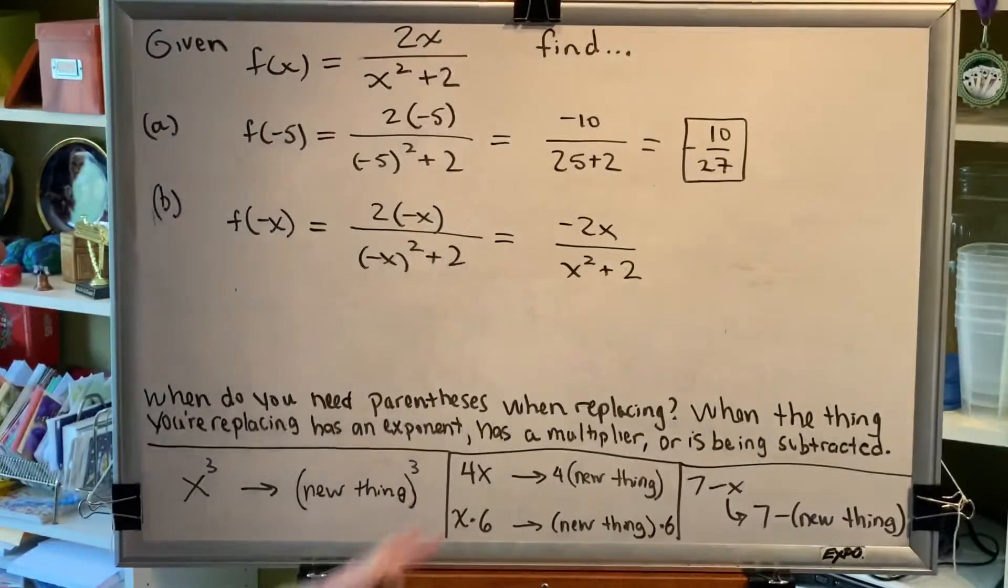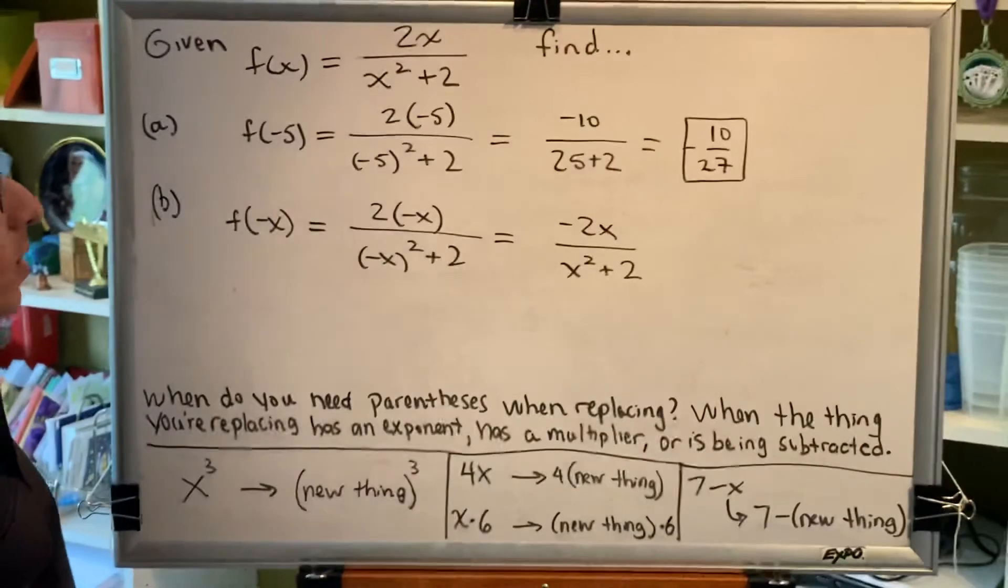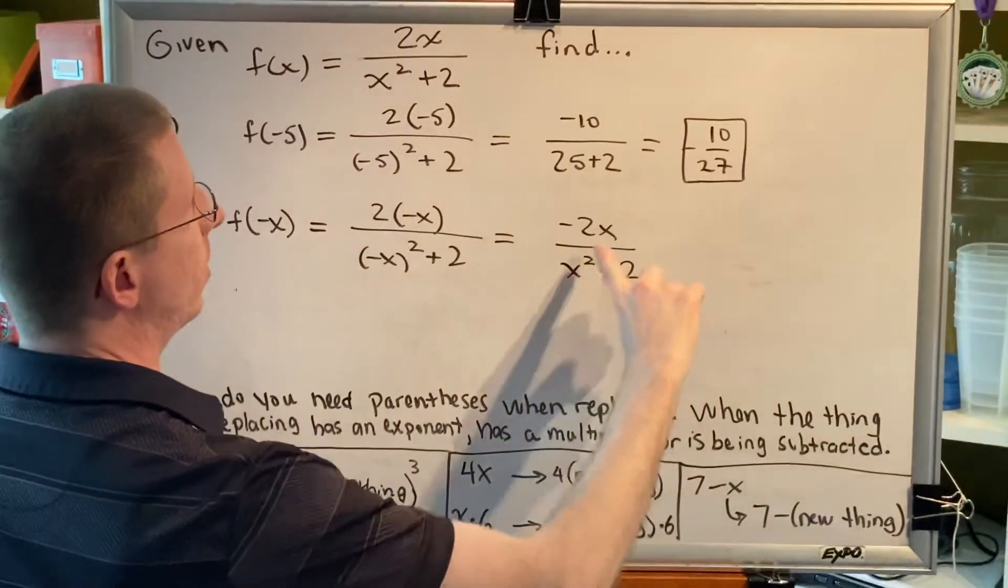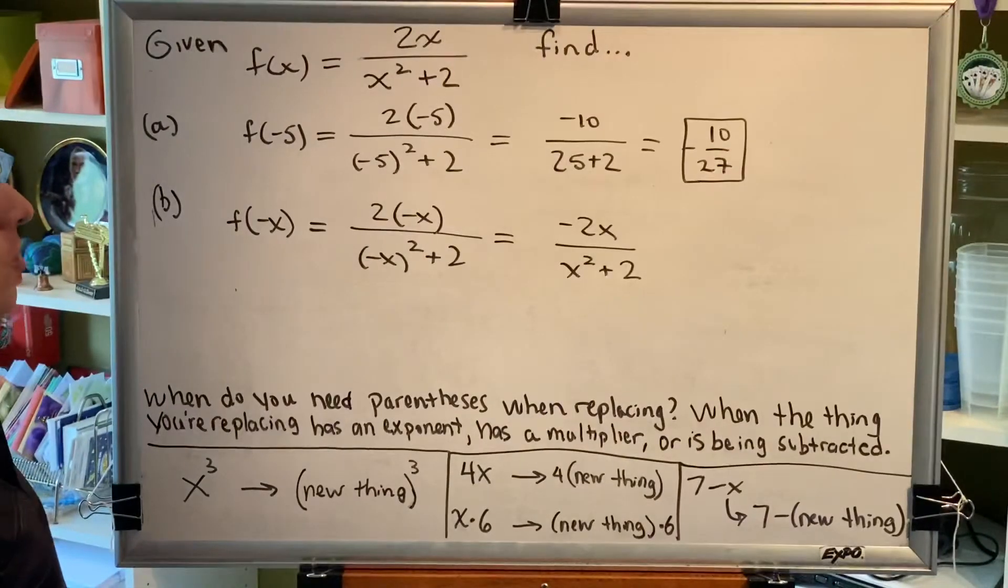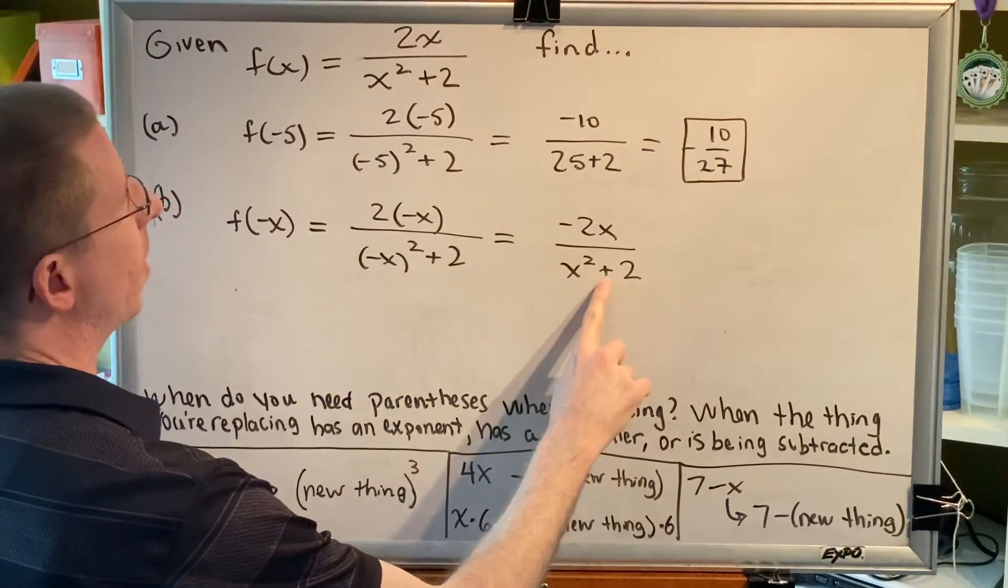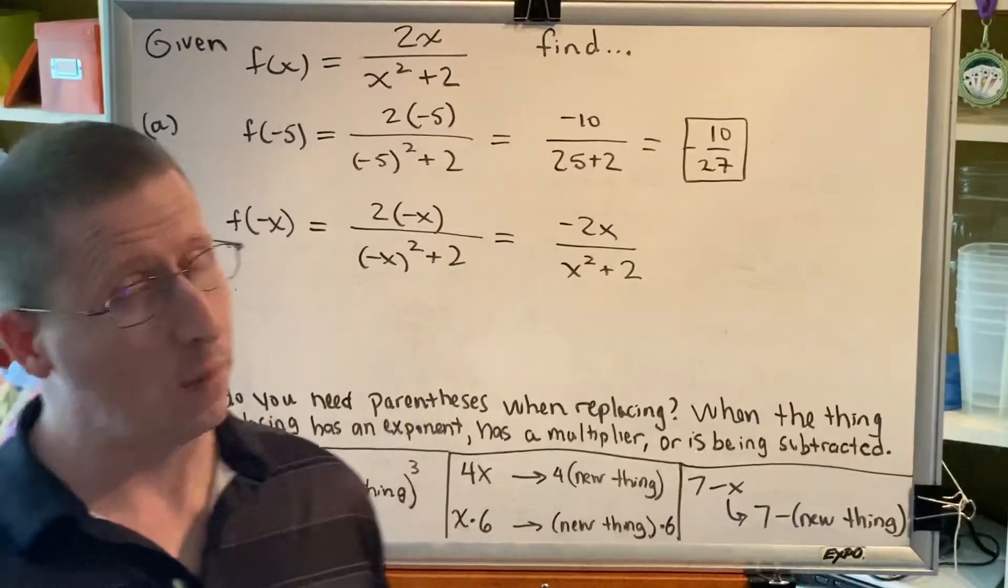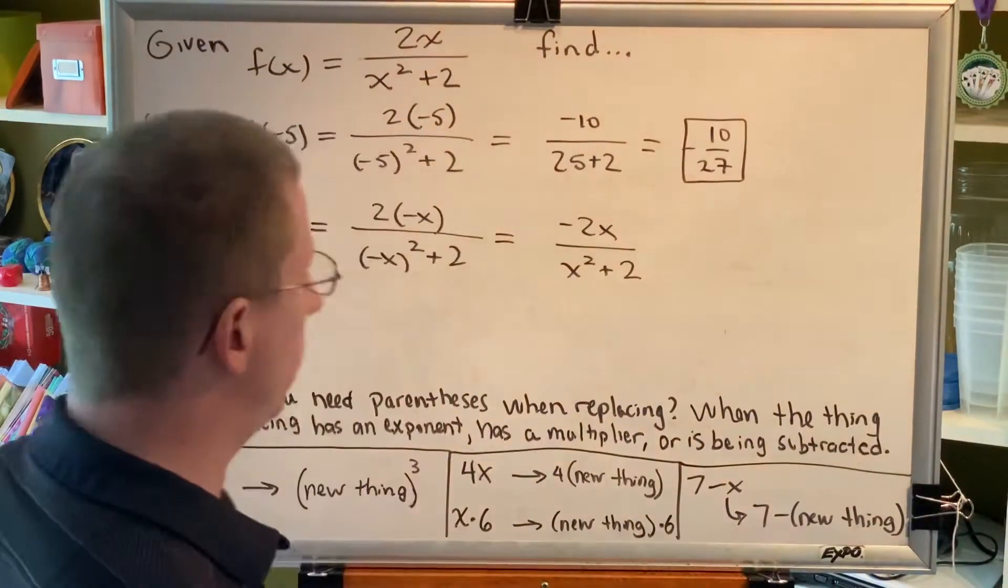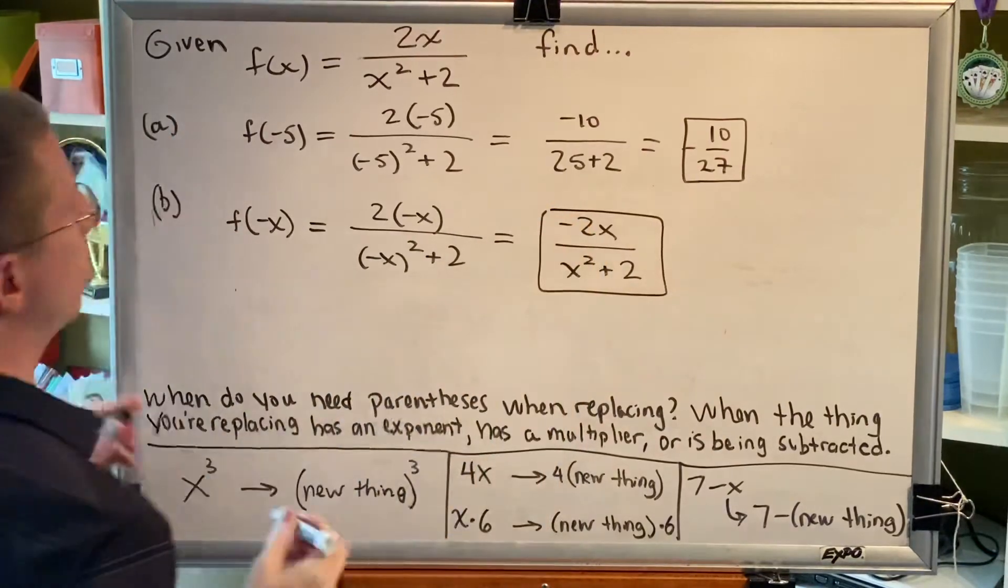Now, is there any part of this that we can simplify? The answer is no. Some students would like to try and cancel this x with one of these x's, but that's not possible. Factors are the only things that you can cancel, and factors are not allowed to have pluses or minuses next to them. They can have pluses or minuses within them, just not next to them. Therefore, nothing about this can be simplified further, and this is our final answer.